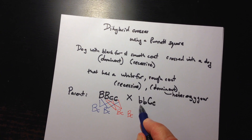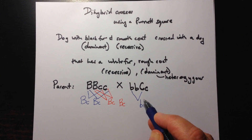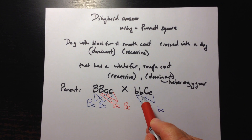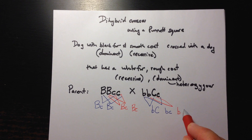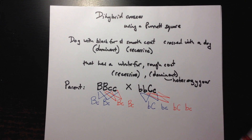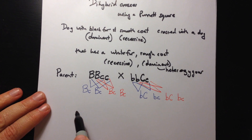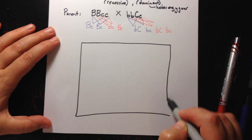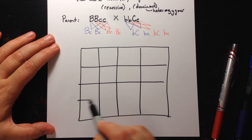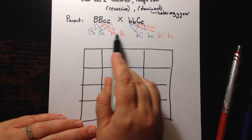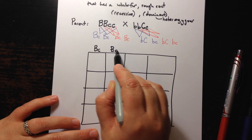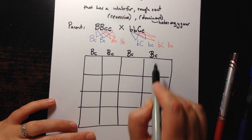Let's do the same on the other side. Start with little b and big C, then little b with little c, then little b with big C, and little b with little c. Now we go ahead and put that into the Punnett square — draw a big block with 16 squares inside. Put these gametes at the top: big B little c, big B little c, big B little c, big B little c.